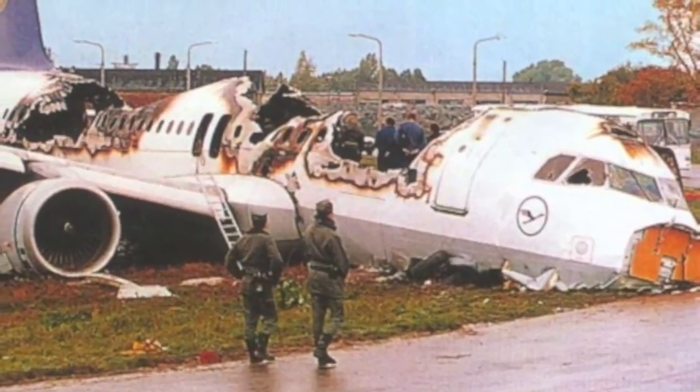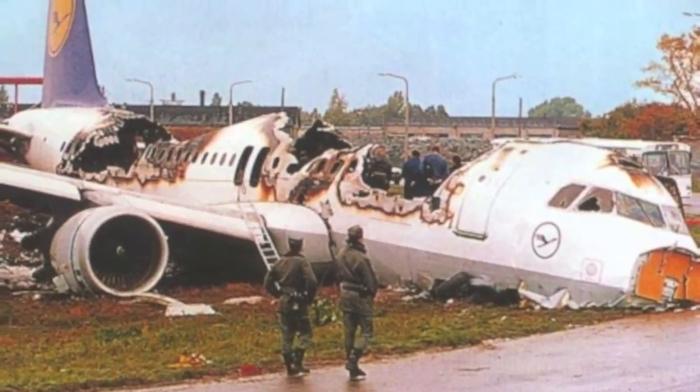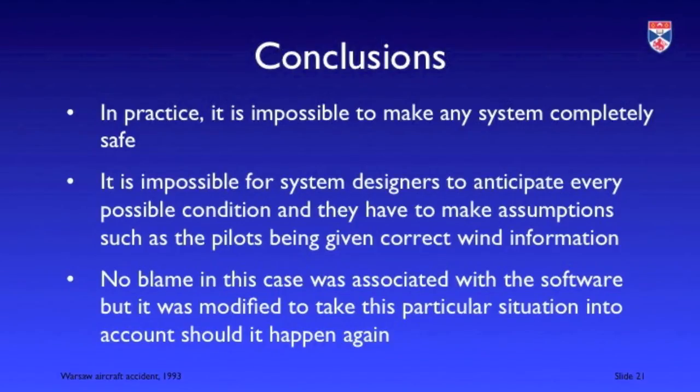What can we say about this? It's very hard to attribute blame to the designers of the software system. There are so many complex conditions that can arise that it's practically impossible to take all of them into account. The designers had to assume pilots would be given correct wind direction information and would pay attention to it — they cannot cope with every possible thing that might go wrong. Once a problem like this is discovered, action is taken, and to my knowledge there have been no subsequent accidents of the same type. But this illustrates that software reliability — software behaving as specified — is not the same as software safety. Accidents can occur even when the software is behaving reliably.